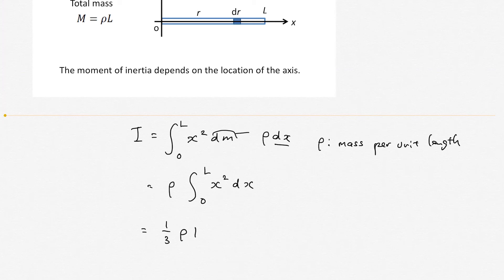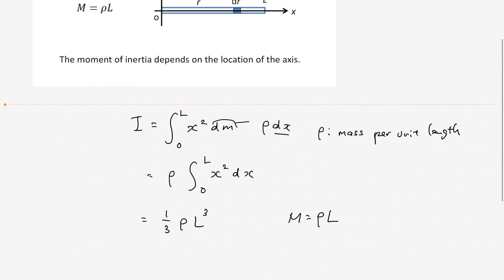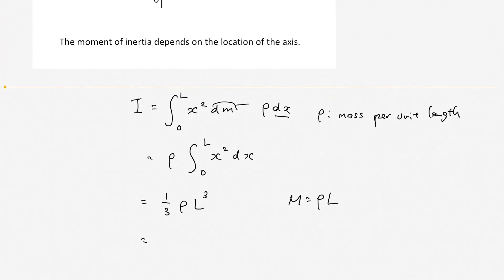And the mass of the cylindrical rod is expressed as ρ times the length of the rod. So if you substitute this, you get one over three, M, L squared. This is the answer to this question.